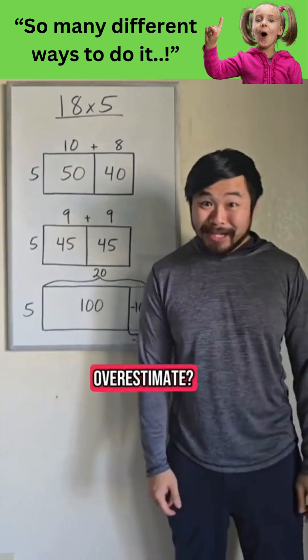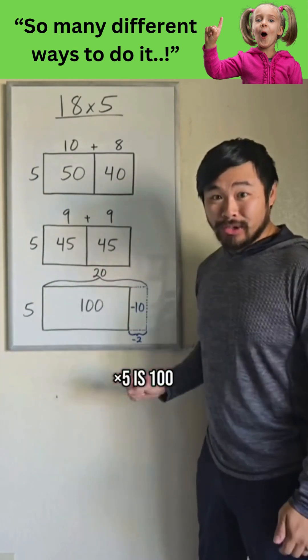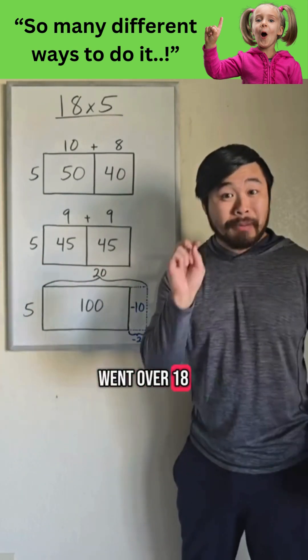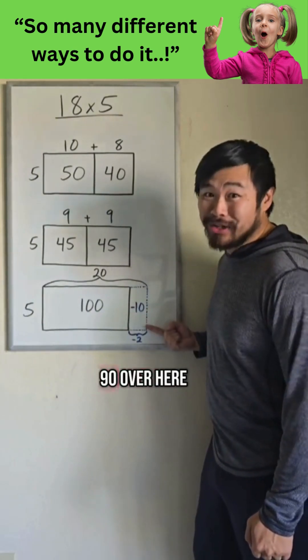Now, can we overestimate? Absolutely. For example, someone can say, well, I know 20 times 5 is 100, but wait, I went over 18 by 2, so I need to take away 2 times 5, which is 10. We still get 90 over here.